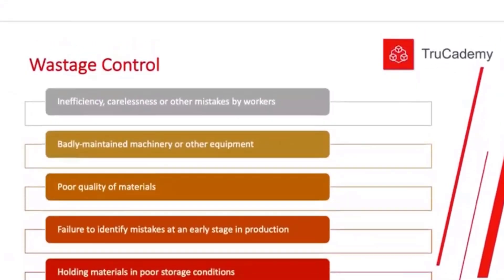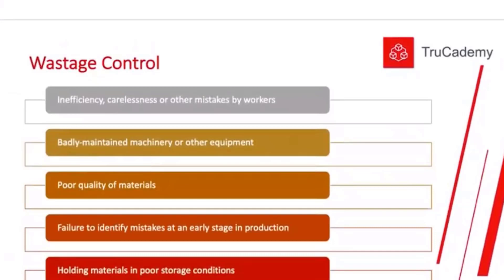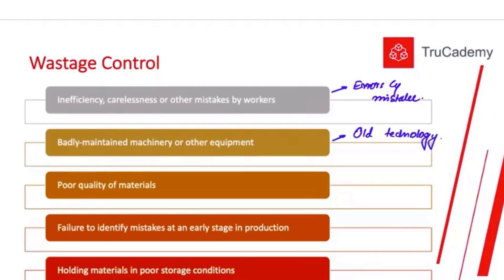Now, wastage control — what are the reasons we have wastage and how do we control it? First, inefficiency, carelessness, or mistakes by workers: errors and mistakes of workers result in wastage. If labor is careless while working, there will be higher material wastage. To control this, appoint a supervisor to maintain tight control so that labor is careful while dealing with inventory. Secondly, badly maintained machinery or other equipment — if we are using old technology machinery,